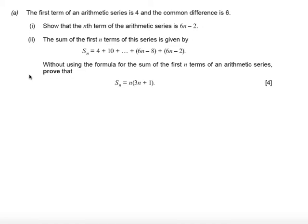In this question we're told the first term of an arithmetic series is 4 and the common difference is 6. Part i says to show that the nth term of an arithmetic series is 6n minus 2. So starting off by saying a, the first term, is equal to 4 and the common difference d is equal to 6.